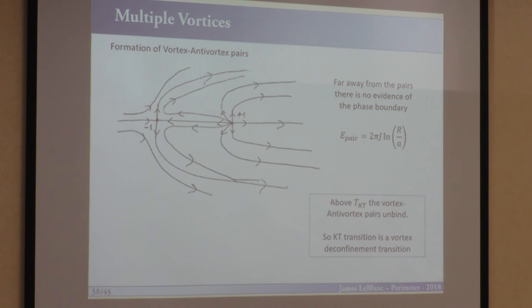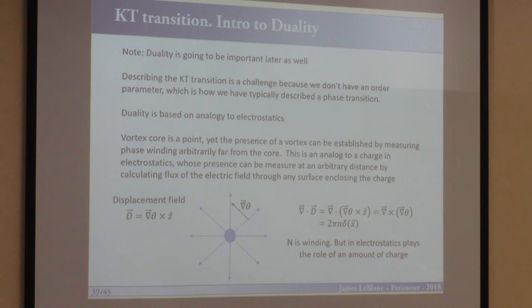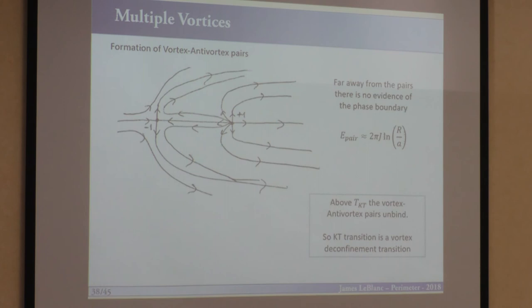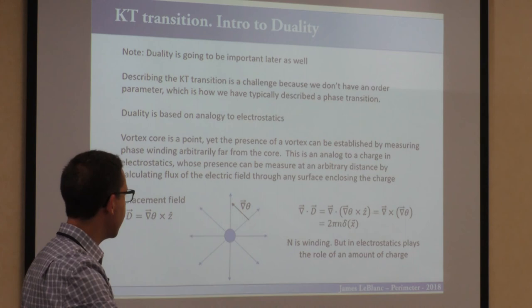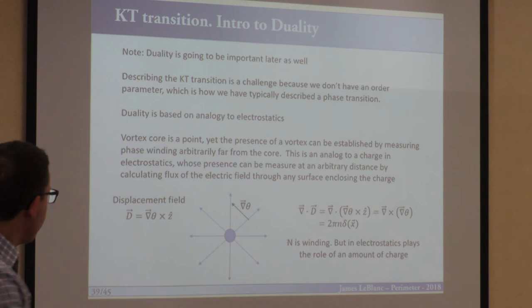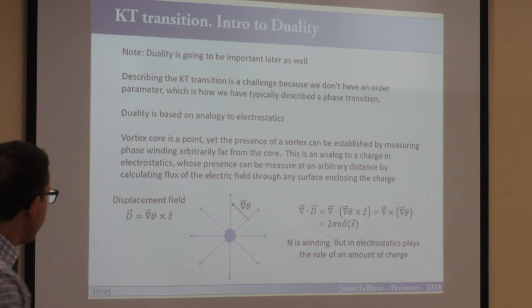A comment from the audience: at least in this country, write BKT rather than KT. For me, KT transitions are not something I'm overly familiar with or spend time working on. But I want to use them as a stepping stone to talk about duality transformations, because duality transformations come up in other elements of condensed matter physics.